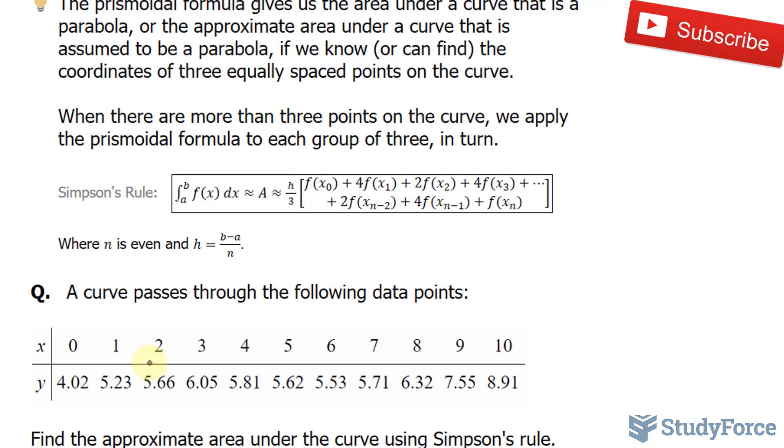You take your h and divide it by 3, multiplied by - and this notation might be confusing but it's really not that difficult. What this actually means is f(x₀) is simply what we had in previous lessons where we had y₀, 4 times y₁, and so on.